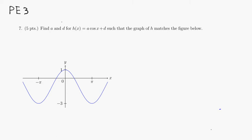Let's look at practice exam 3, problem number 7. We need to find the value of a and the value of d to match the picture here. We're going to start with the plane cosine function, so first one is y equals cosine of x.